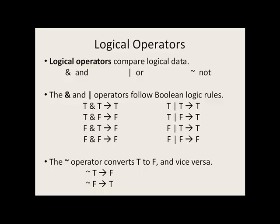Logical operators allow you to compare logical data, and we have three of them: and, or, and not. The and and or operators follow the rules of boolean logic. So a true and a true statement will yield a true. However, true and false, false and true, and false and false will all yield false. True or true, true or false, and false or true will all yield true. However, false or false will yield false. The not operator converts true to false and vice versa — it takes a true statement and makes it false, or it takes a false statement and makes it true.